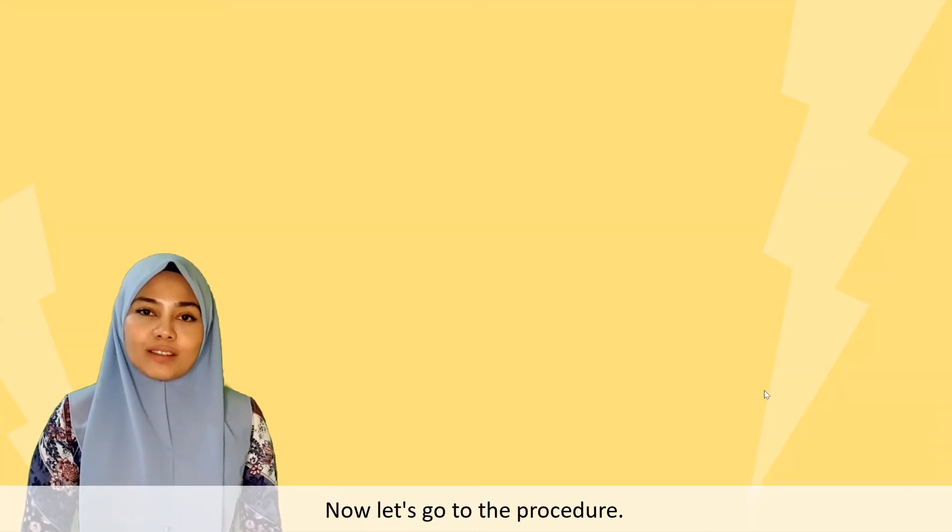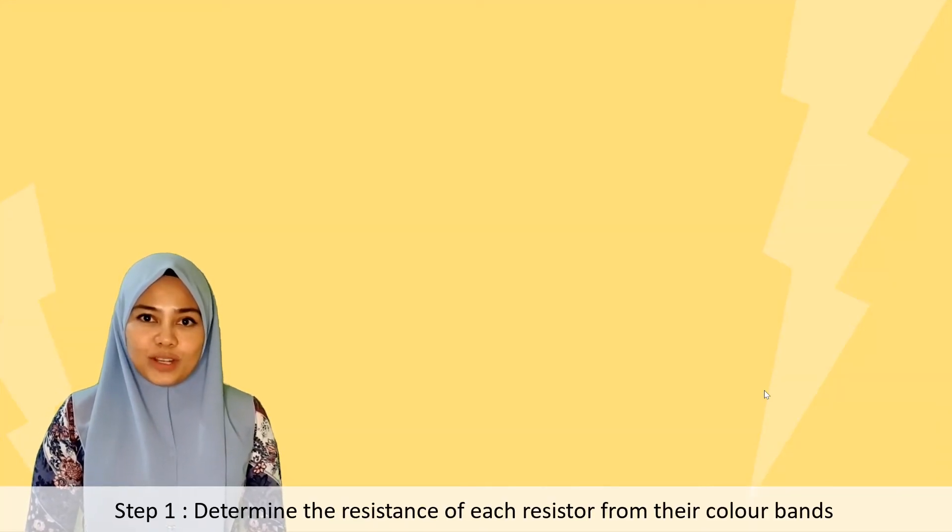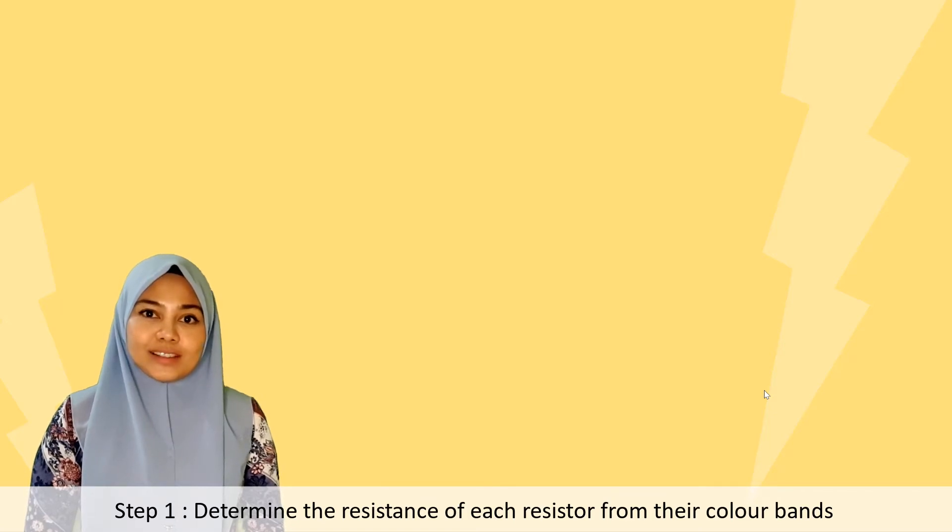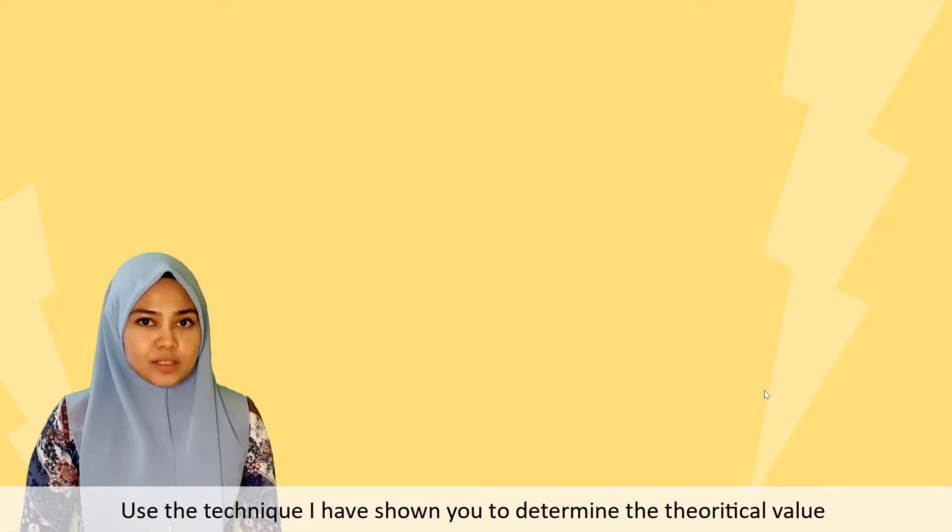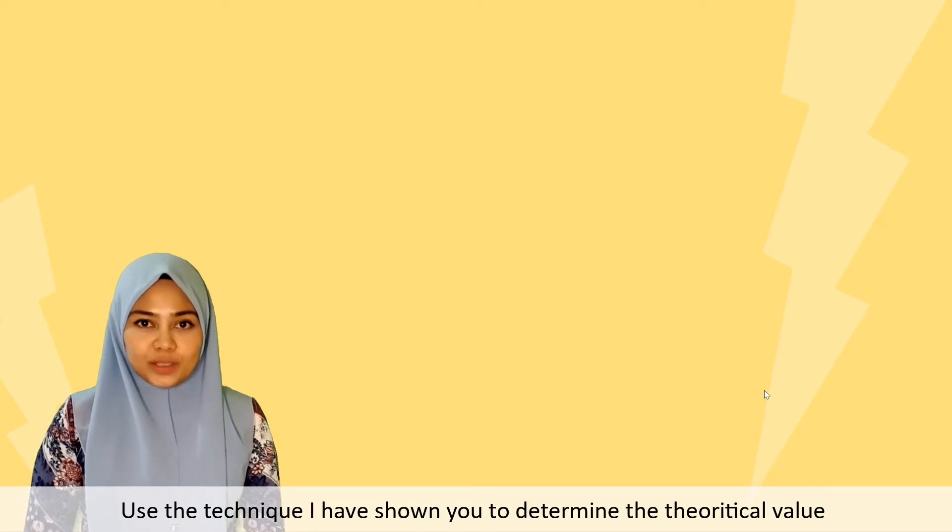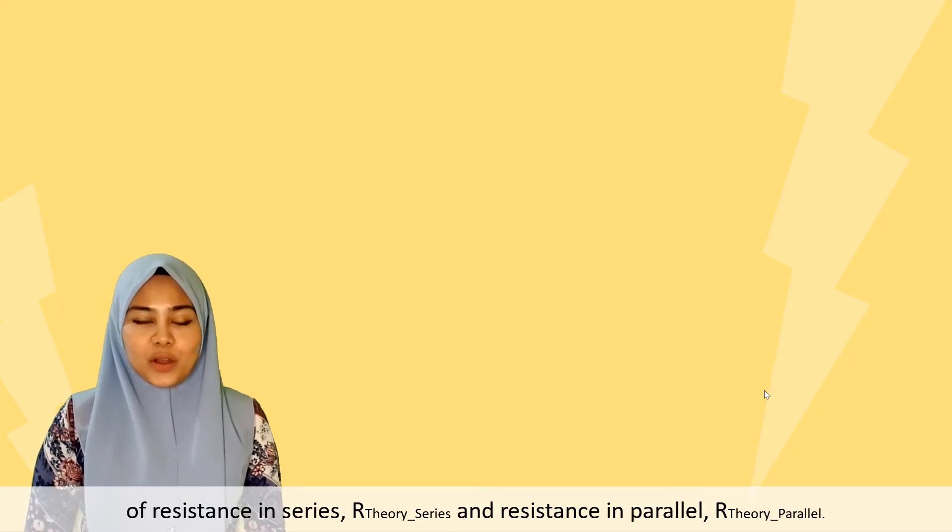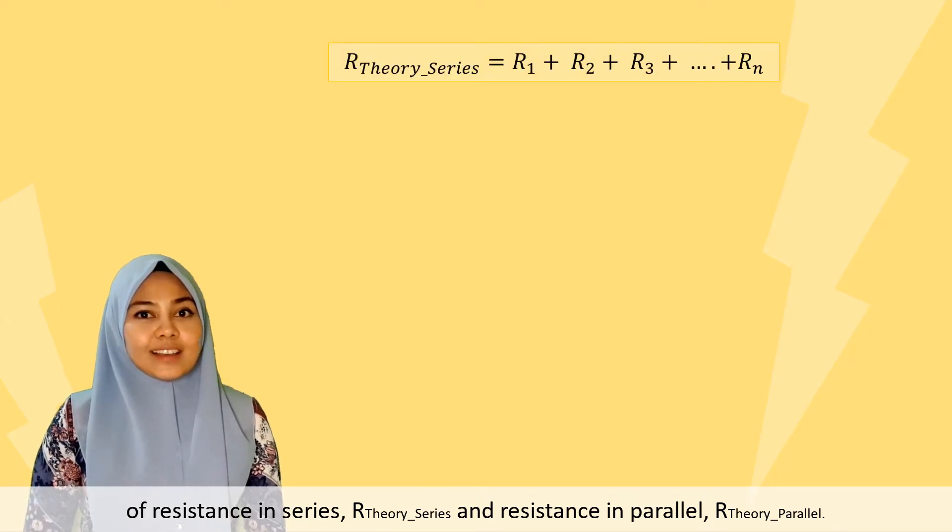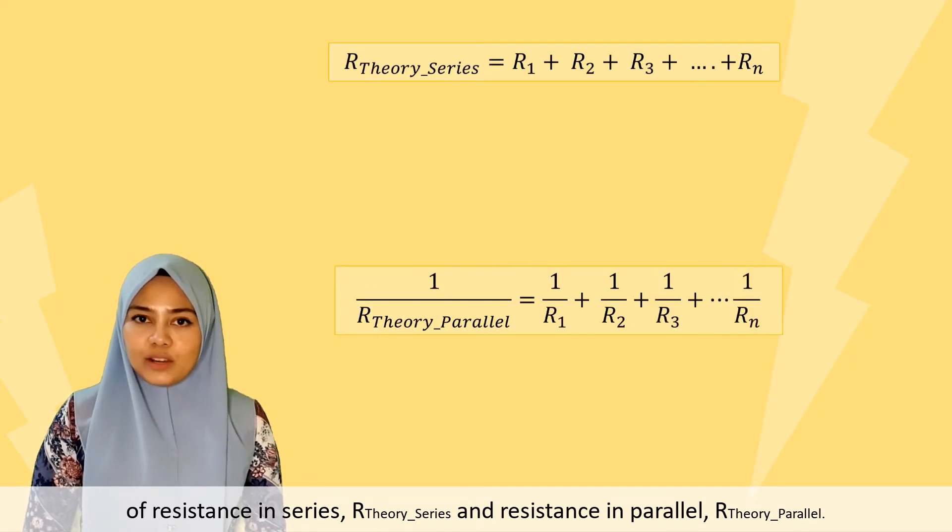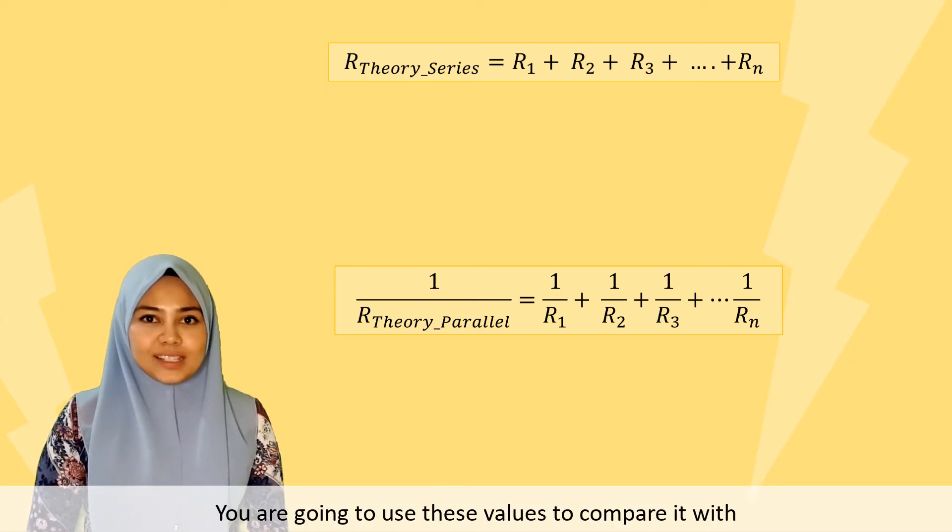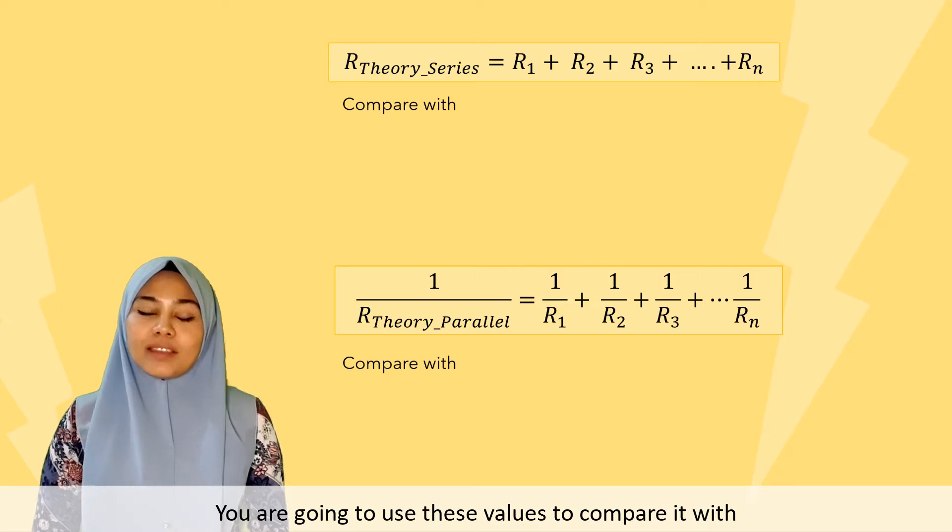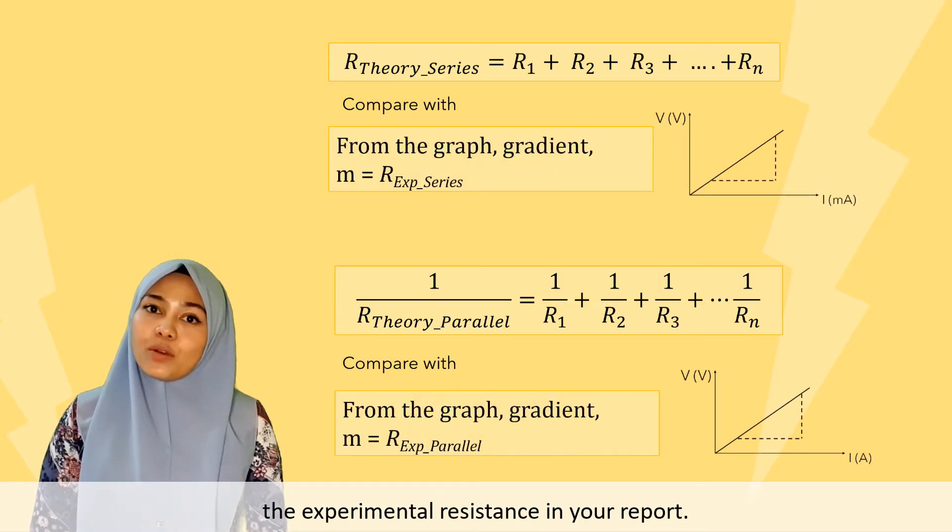Now, let's go to the procedure. Step 1: Determine the resistance of each resistor from their color bands. Use the technique I have shown you to determine the theoretical value of resistance in series, R theory series, and resistance in parallel, R theory parallel. You are going to use these values to compare it with the experimental resistance in your report.